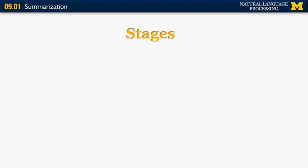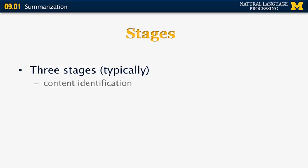A typical summarization system can have up to three stages. The first stage is content identification — given your input documents, you determine what information you want to preserve and pass on to the next stage, such as specific sentences, named entities, or facts. The next stage is information organization: do you want to combine information from multiple documents, preserve entire sentences, or reorder them? Finally, there is realization. In realization, if you pull one sentence from each of two documents, they may not read nicely next to each other, so this stage may include generating connectives such as 'for example,' 'therefore,' or 'in contrast' to tie sentences from different sources together more coherently.